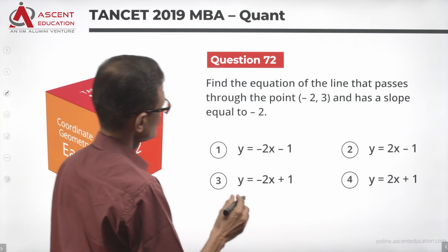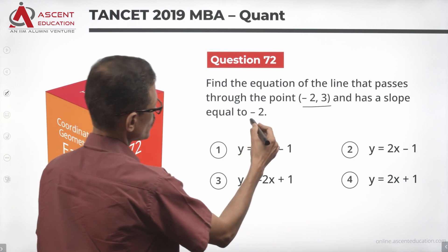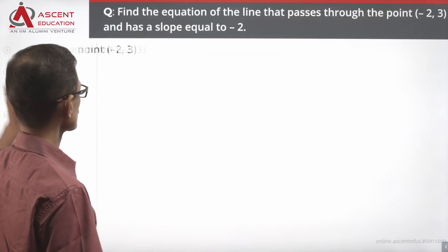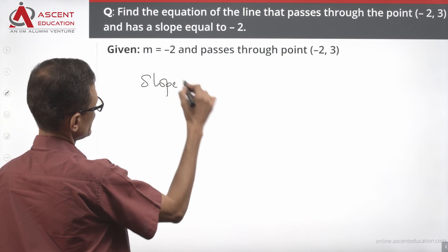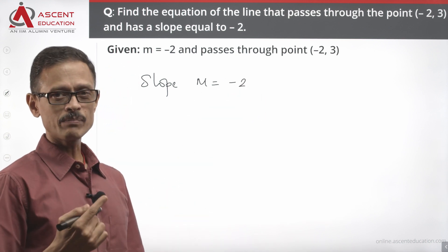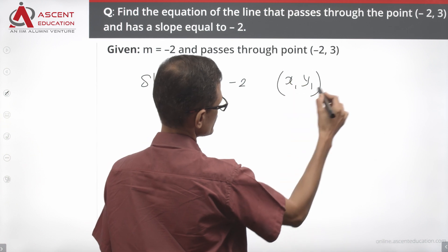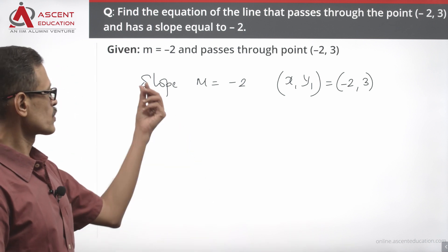Find the equation of the line that passes through the point and has a slope equal to minus 2. We have the details: slope M is equal to minus 2, and the line passes through the point x₁, y₁. In this particular question, x₁, y₁ equals minus 2, 3.